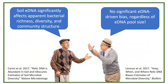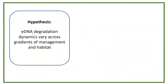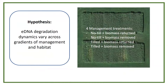As a way to wade into this conversation, I wanted to test the hypothesis that the degradation dynamics of eDNA — which will influence eDNA-driven bias — vary across gradients of both agricultural management and habitat type. To start, I needed soils from a management gradient. I chose samples from a long-term corn trial in Chazy, New York, a multi-decade study applying factorial combinations of intensive tillage, no-till, corn biomass removal, and corn biomass return, resulting in a clear management gradient accompanied by a clear soil organic matter gradient.